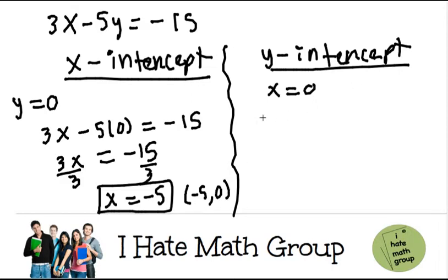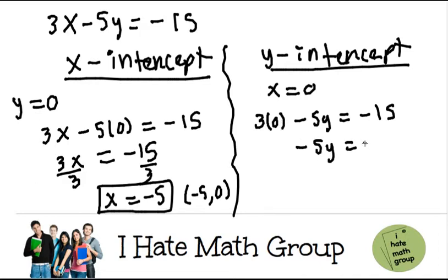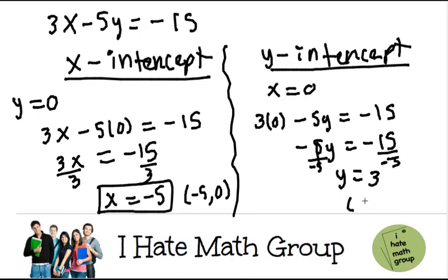Now let's do the y-intercept. Here I do 3 times 0 minus 5y equals negative 15. 3 times 0 is just 0. Negative 5y equals negative 15. Y equals — I divide by 5 — and negative 15 divided by negative 5 is just 3. So my answer is going to be 0, 3.